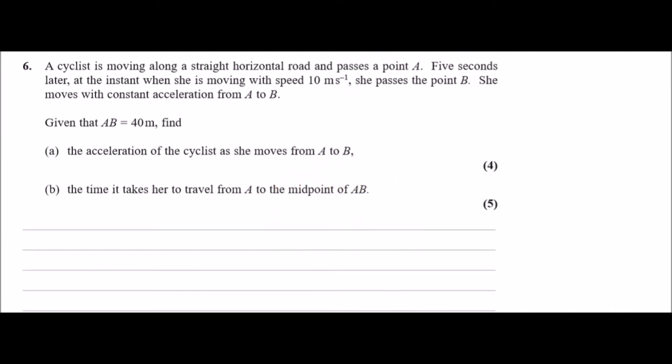Okay guys, here we go, question six. This is one of the usual SUVAT style equations, pretty straightforward. A cyclist is moving along a straight horizontal road and passes a point A. Five seconds later, at the instant when she is moving with speed 10 meters per second, she passes the point B. She moves with constant acceleration from A to B.